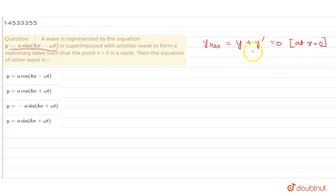So, at x = 0, this equals 0. Now, from this equation, we can see that y' will be equal to -y, that is equal to -a sin(kx - ωt).